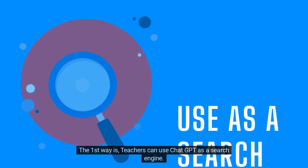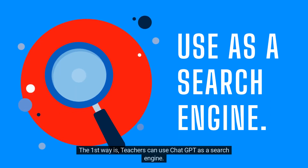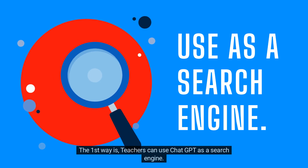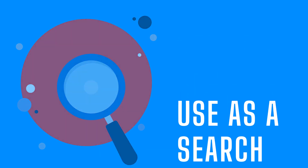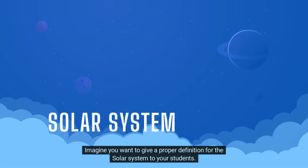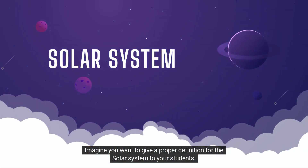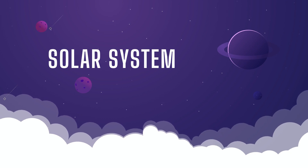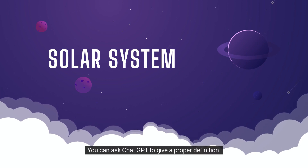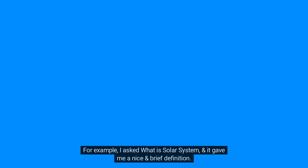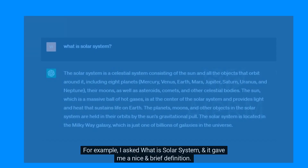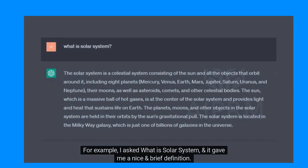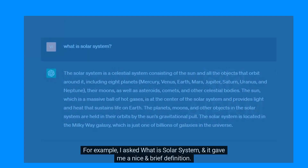The first way teachers can use ChatGPT is as a search engine. Imagine you want to give a proper definition of the solar system to your students. You can ask ChatGPT to give a proper definition. For example, I asked what is the solar system and it gave me a nice and brief definition.